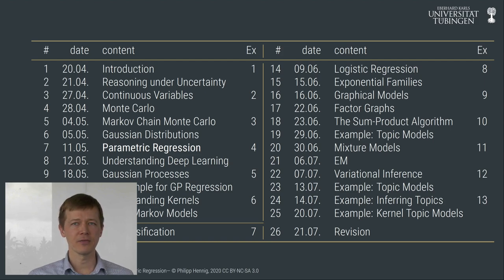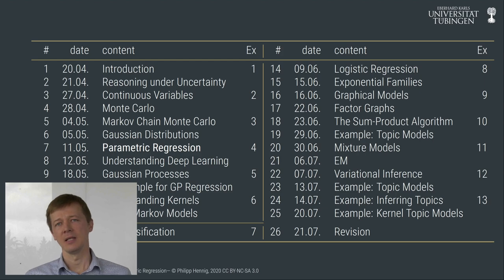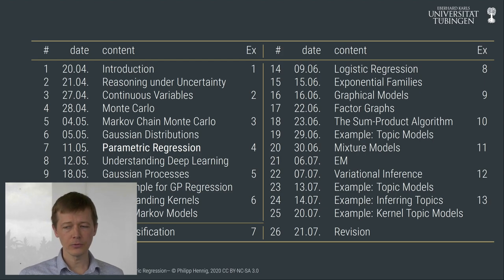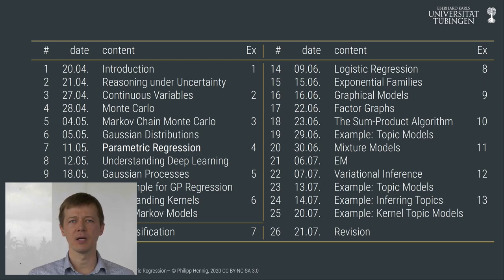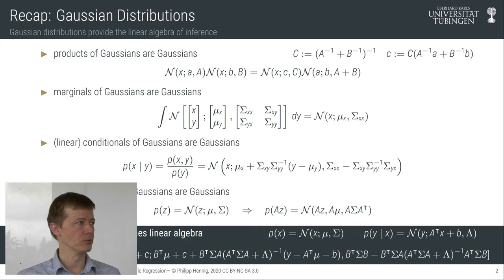These are called Monte Carlo methods, and we extended them in lecture five through a relatively generic toolset. In the last lecture, I introduced another crucial tool for probabilistic inference given by Gaussian distributions. Gaussian distributions map probabilistic inference onto linear algebra, and linear algebra is something that computers are good at, so they're going to be a beautiful tool to use.